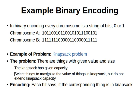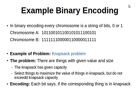What we need to do is select a subset of those objects to maximize the value of things in the knapsack, but without exceeding the capacity of the knapsack. To represent that in a binary string, each bit says whether the corresponding object is in the knapsack. We give each object a number — say, one to ten — and we have a binary string of length ten. Each bit represents one object: if it's one, the object is present; if it's zero, the object is not there.